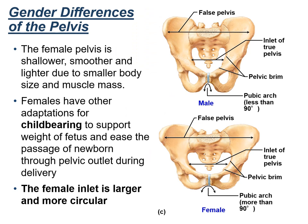Anatomically, the pelvis shows gender differences. The female pelvis is smaller, smoother, and lighter due to smaller body size. The female pelvis also shows adaptations for childbearing that support the weight of the fetus and allow the passage of the newborn through the pelvic outlet during childbirth.